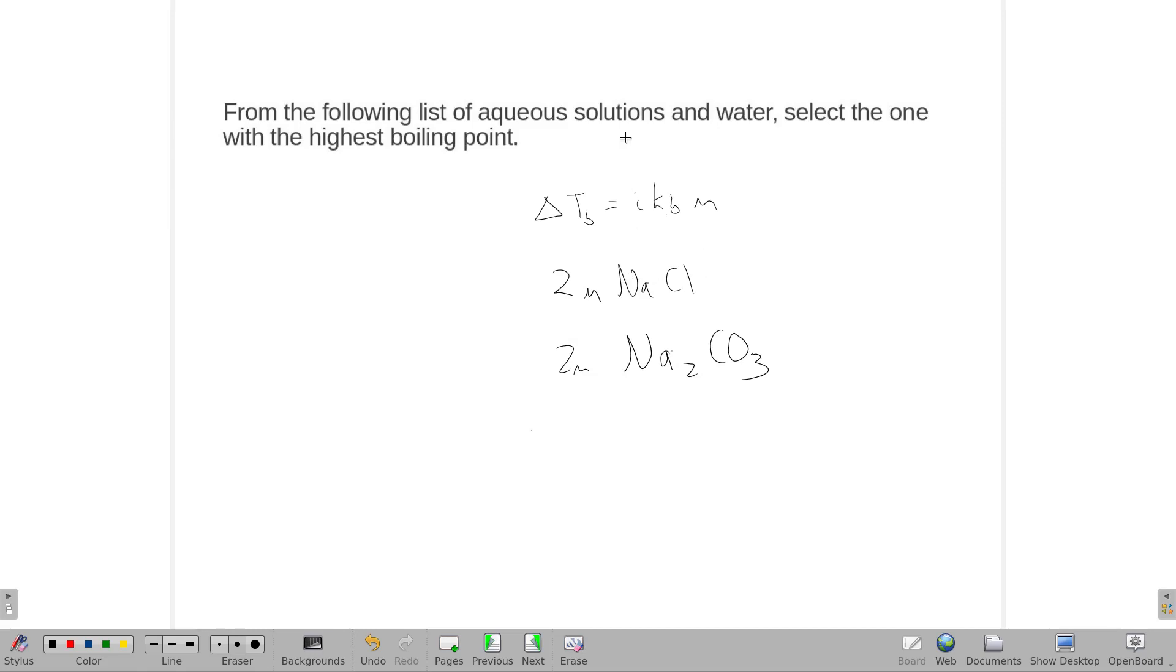So you want this to be as large as possible and that to be as large as possible, and you could almost multiply them. So if I give you a discrepancy or a difference there, take that concentration, multiply it by the i, and the one with the highest amount should be the one with the highest boiling point.